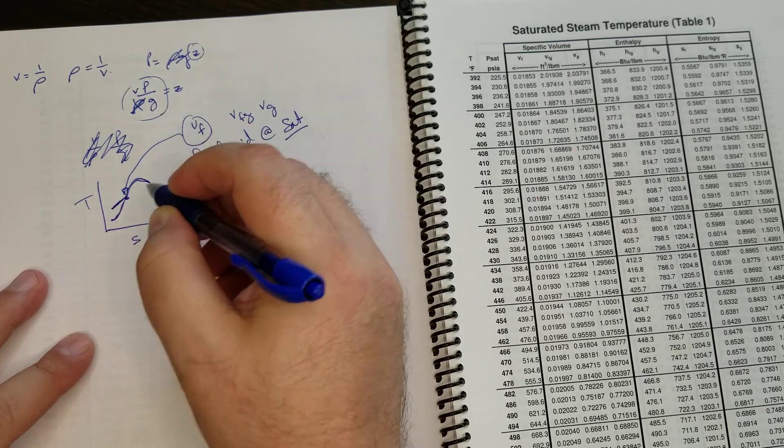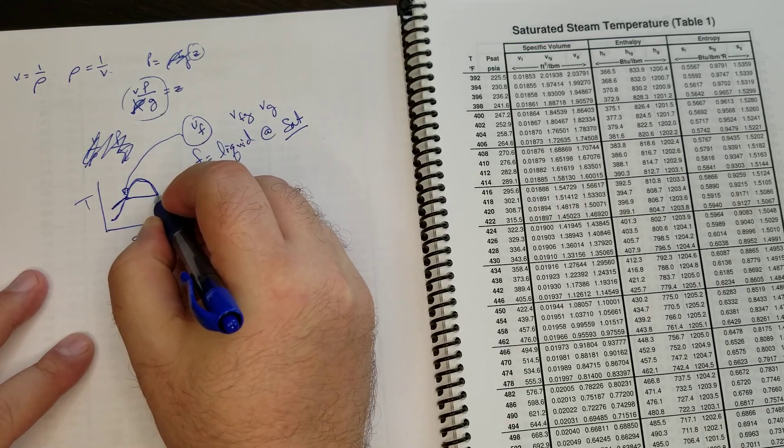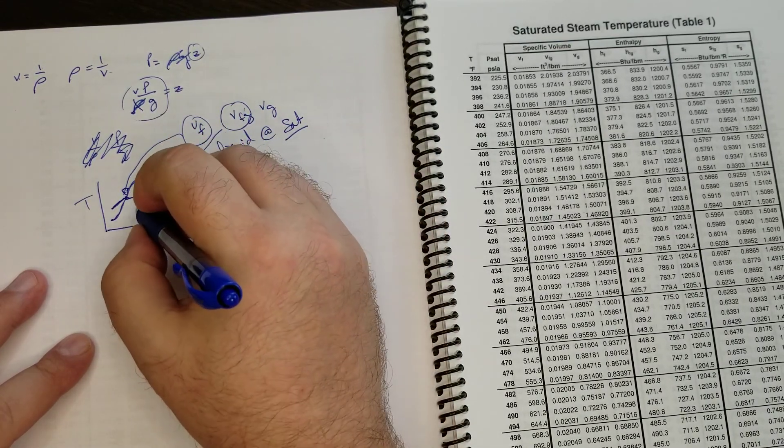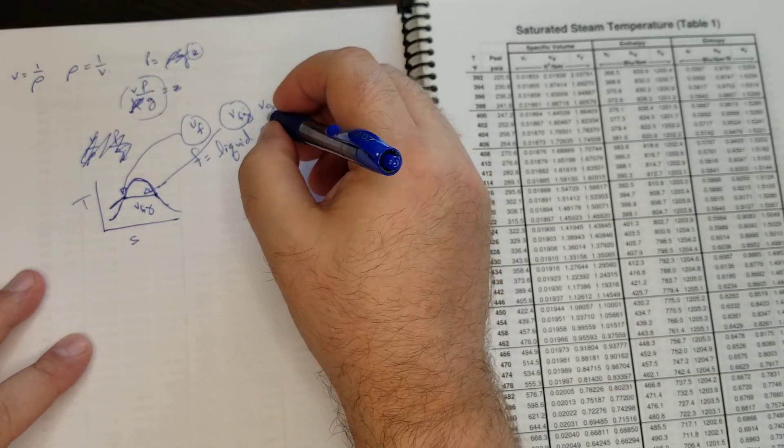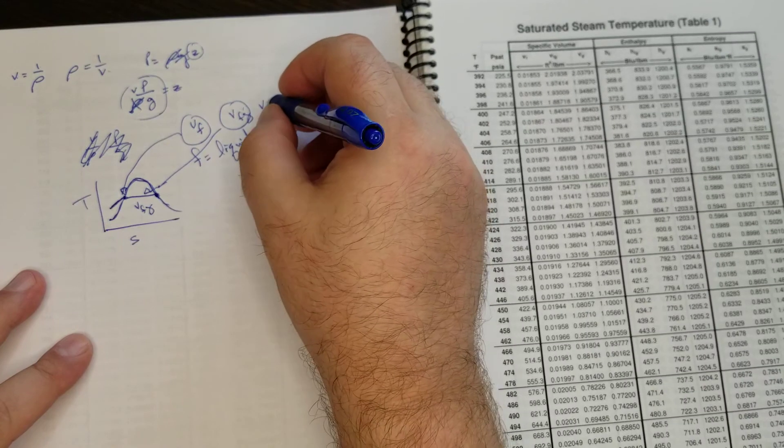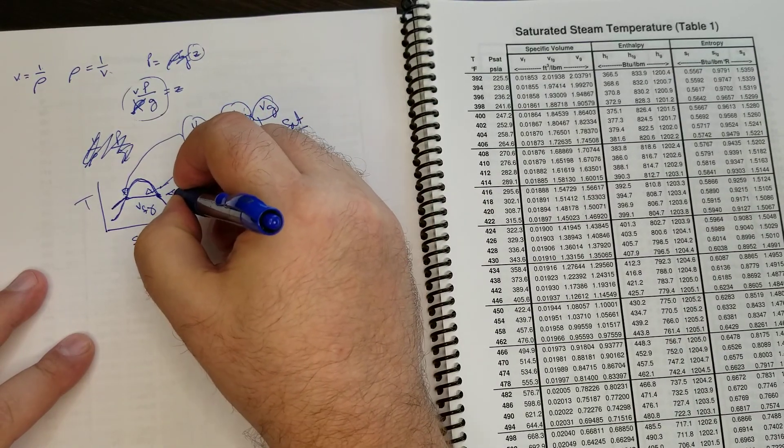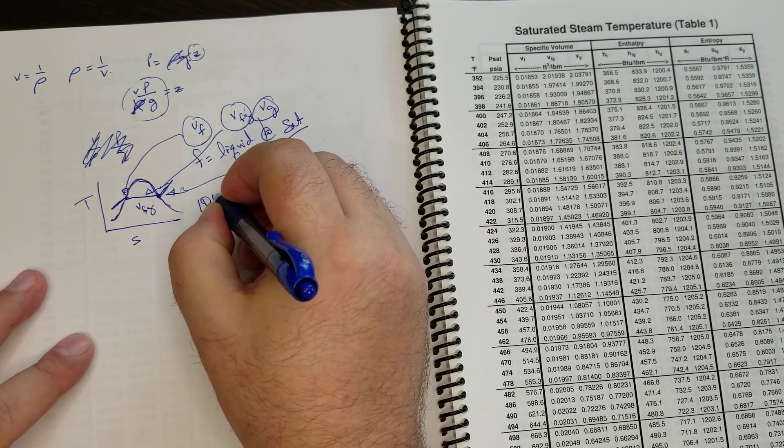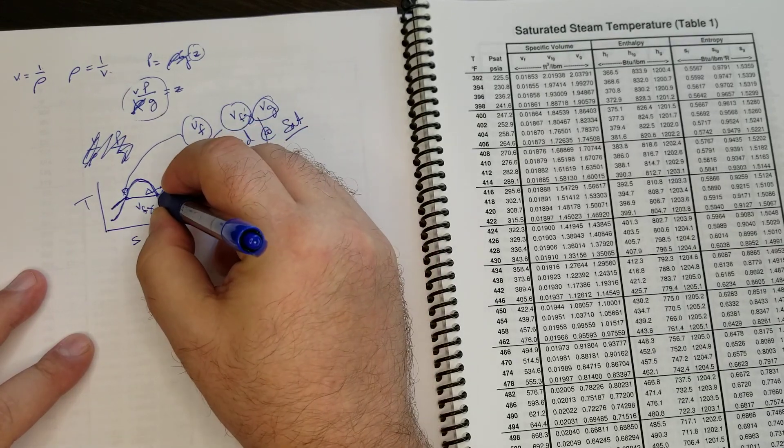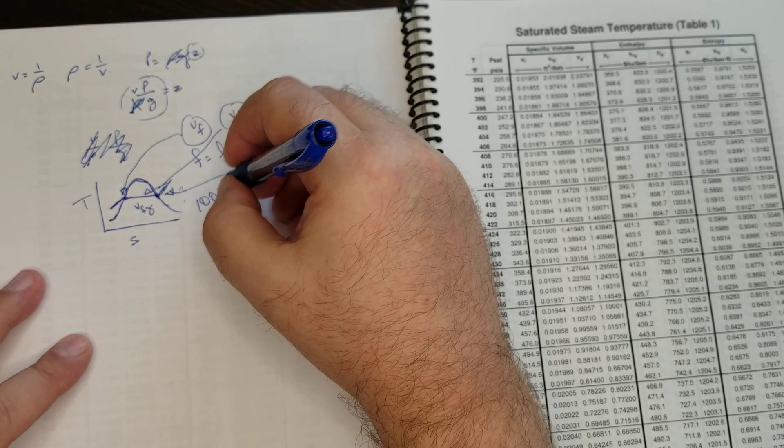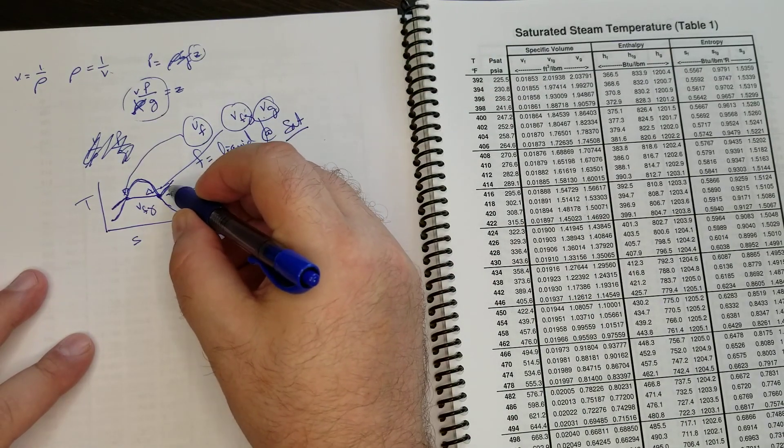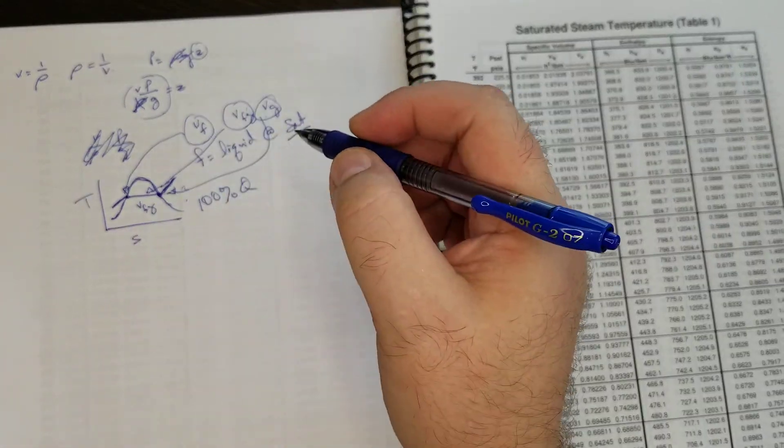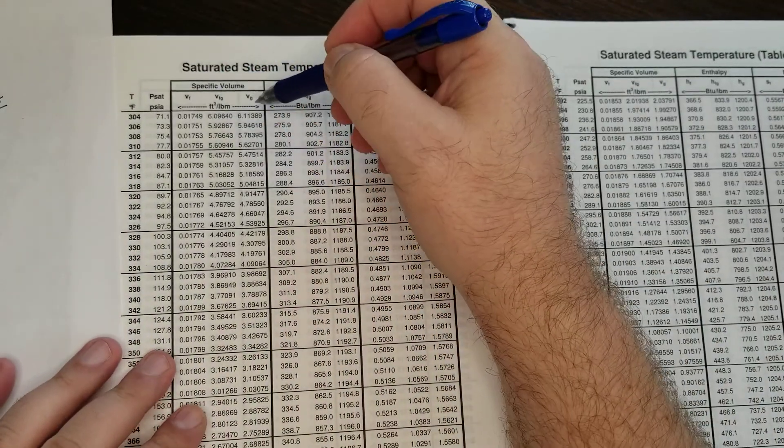And this is the saturation curve, right? Temperature goes up as we add heat until we get to this point, V sub F. As soon as we're at that point, we start going through the phase change, where this is all V sub FG. Until we get to the other side of that saturation curve, which is V sub G. And then at that point, it's 100% quality. V sub G is 100% quality. And so any additional heat after that, now we're in superheated steam. And sensible heat, temperature goes up.